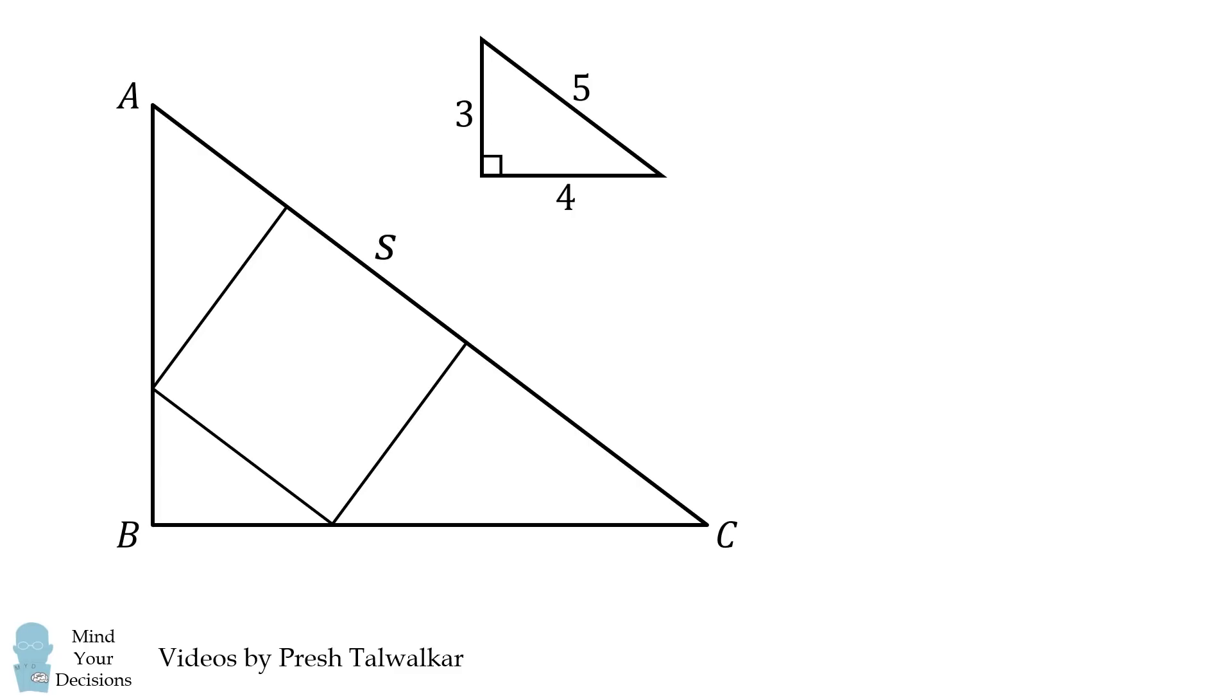Suppose the square has a side length equal to S. In this triangle we have its shorter leg is equal to S which means its longer leg will be equal to 4 over 3 times S. In this triangle the longer leg is equal to S which means the shorter leg will be 3 fourths multiplied by S.